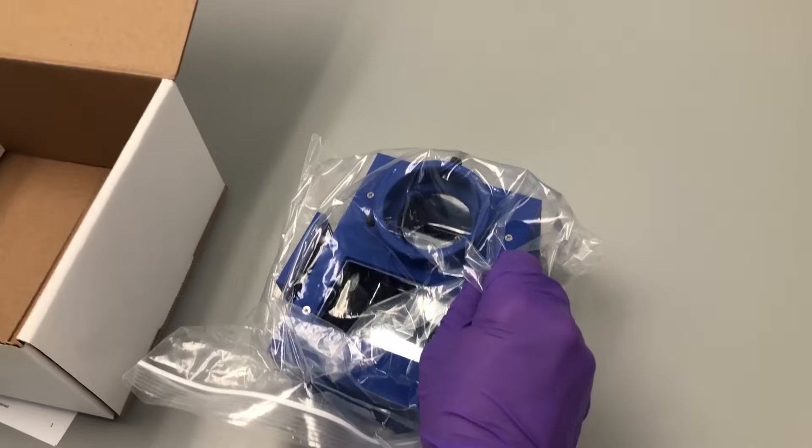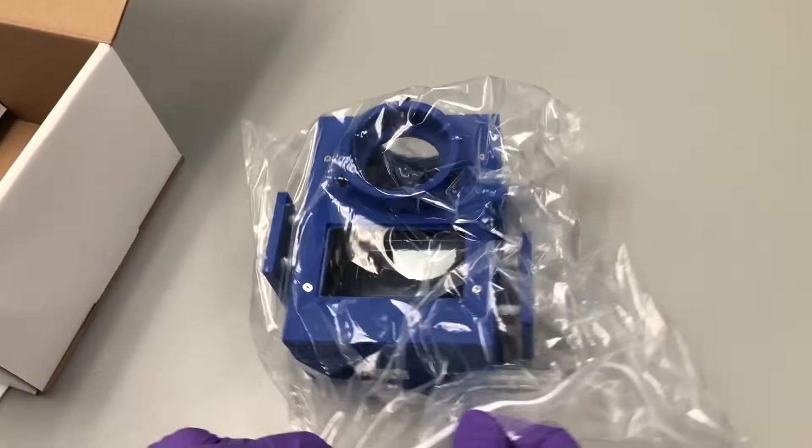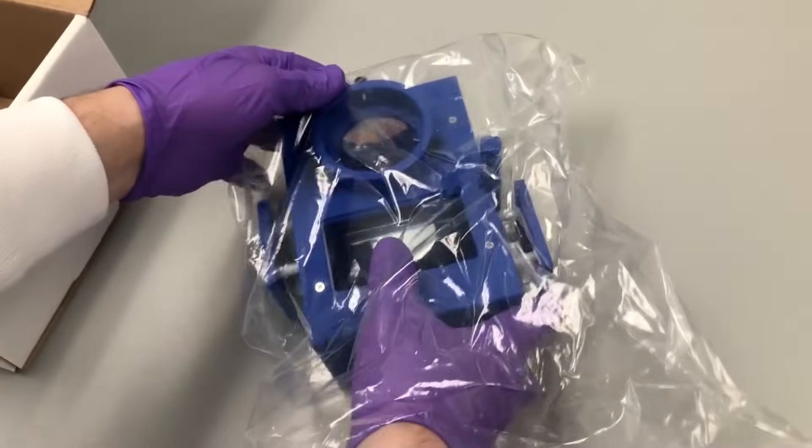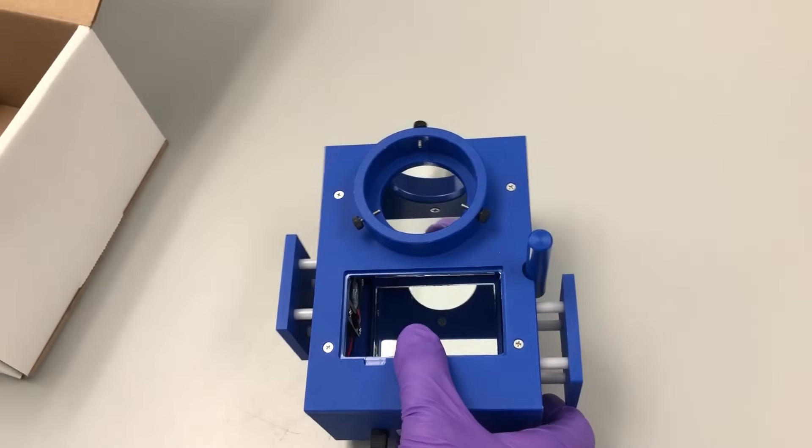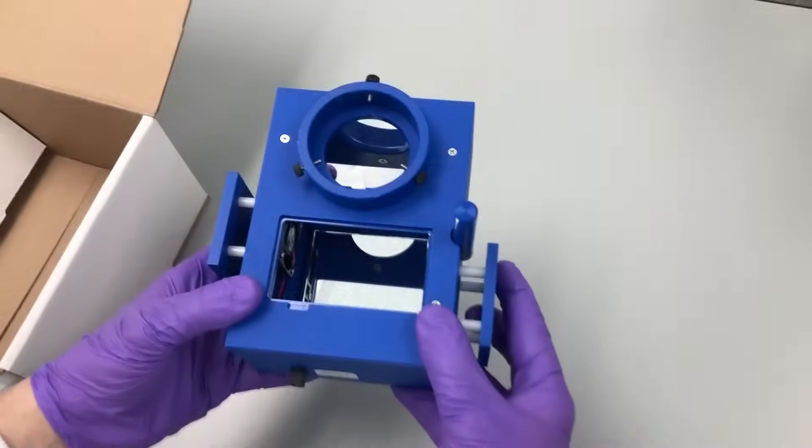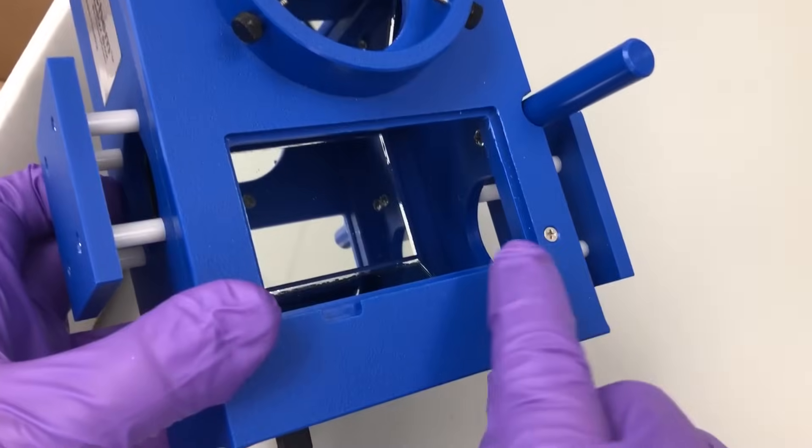The photoredox box itself comes wrapped to avoid scratches to the reaction chamber mirrors. Once you have removed the photoreactor from the plastic, you can view the various mirrors that are placed at specific angles throughout the reaction chamber.